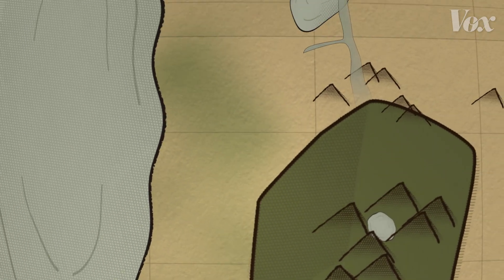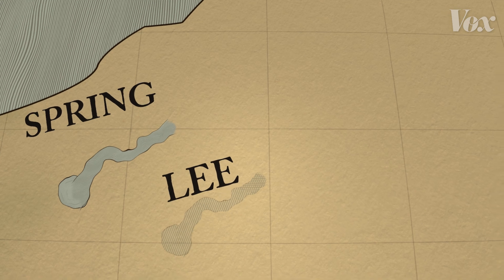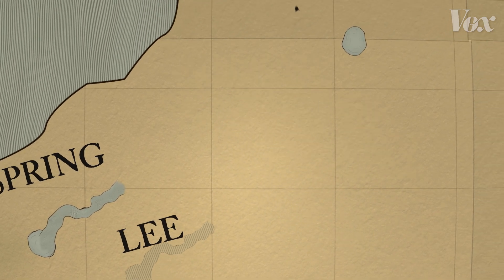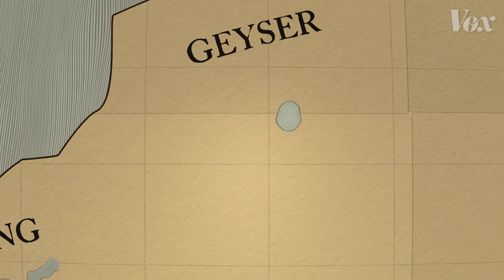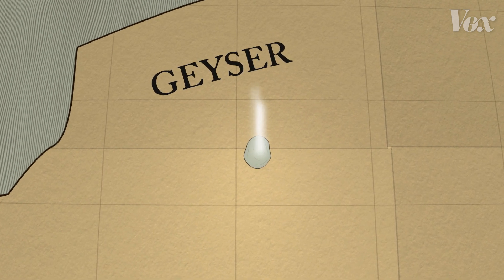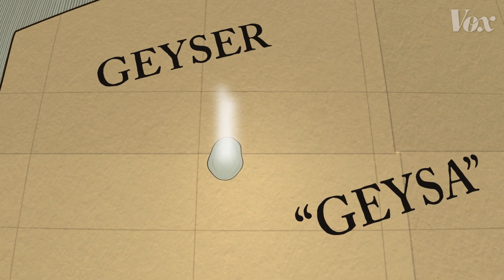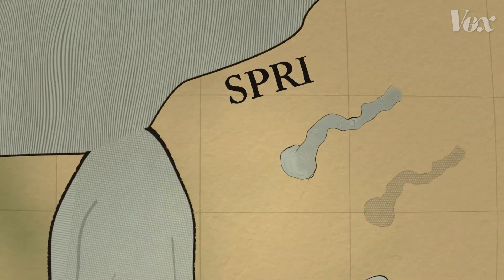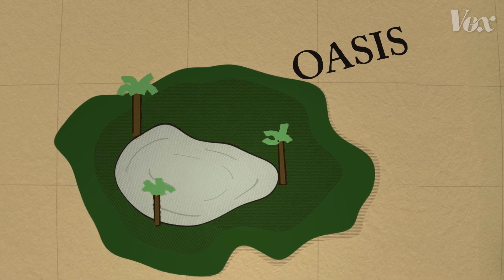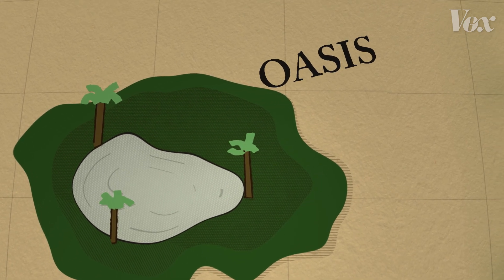A spring shows up when groundwater flows to the surface. Sometimes a lee is a natural spring flowing under the earth. A geyser is a spring that boils and occasionally bursts up — the word can be traced to geysa, meaning to gush. And in the desert, coming from groundwater as well, you'll find an oasis: a green and fertile patch that comes from an isolated lake.